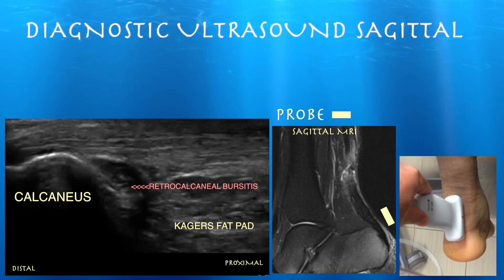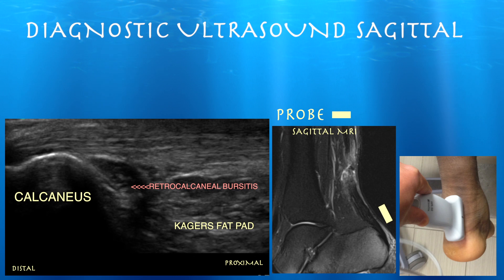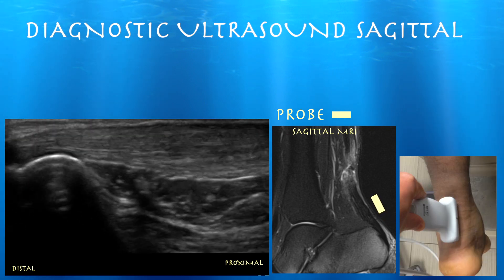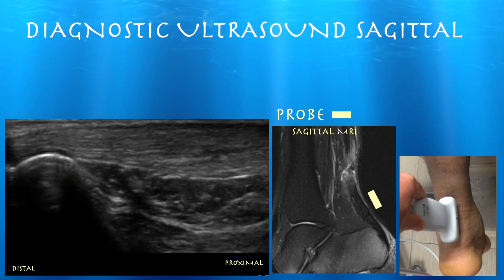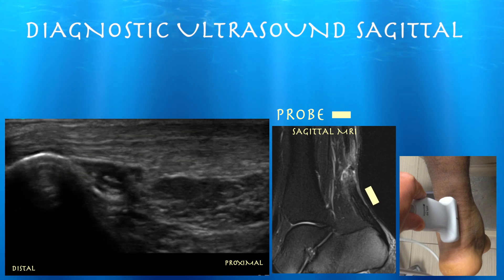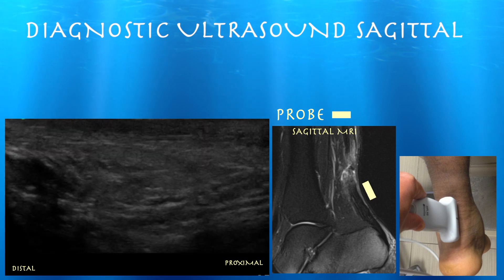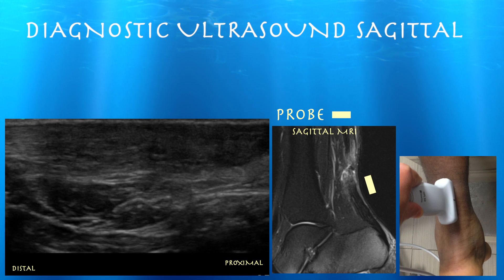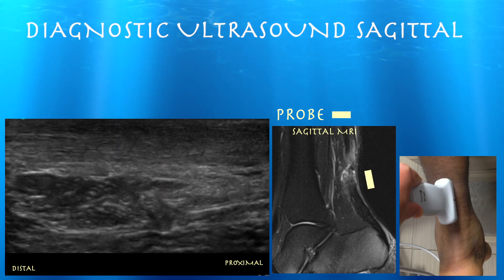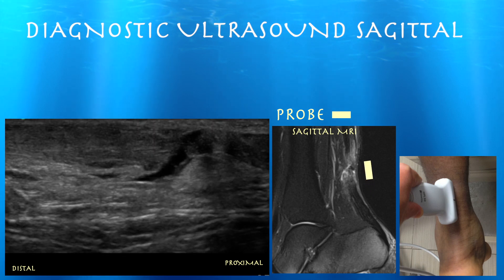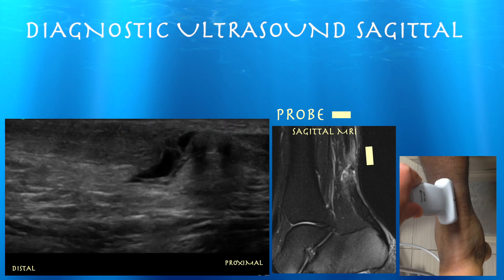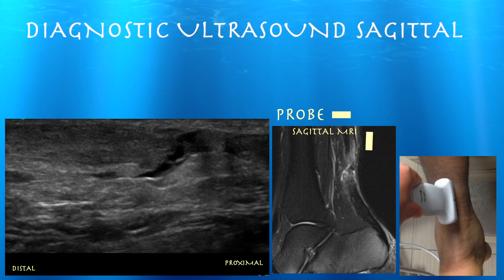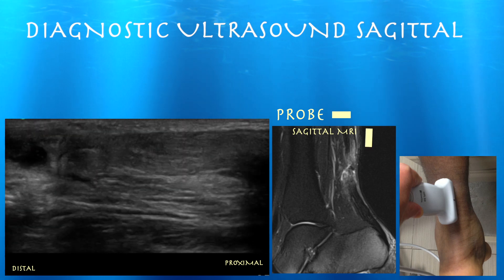On ultrasound, sagittal view, shows retrocalcaneal bursitis. The distal Achilles tendon is fairly well preserved. You can see the probe in the middle picture — the probe is going up approximately along the Achilles tendon. As we approach the tear, you'll be able to see clearly a discrete break within the Achilles tendon consistent with a full thickness tear. Interestingly, this is only a gap of a couple of millimeters, perhaps three or four millimeters. When we actively plantar flex him, we can reduce that gap to about one millimeter.